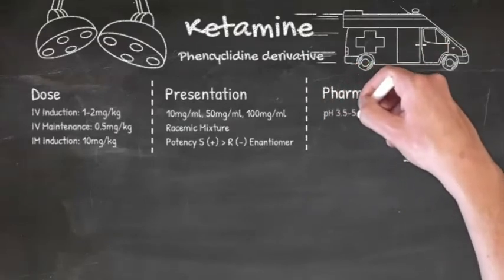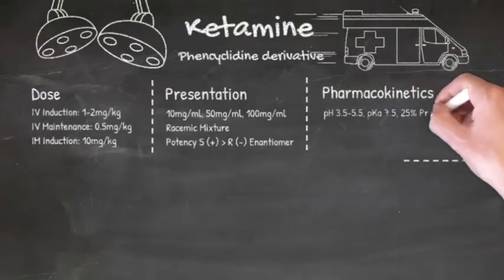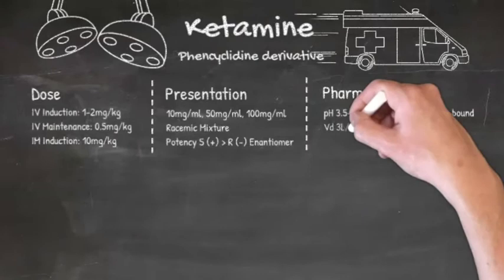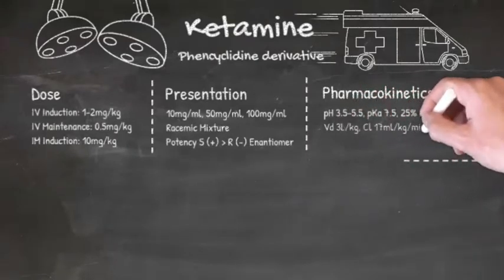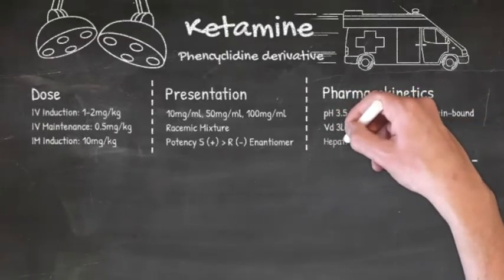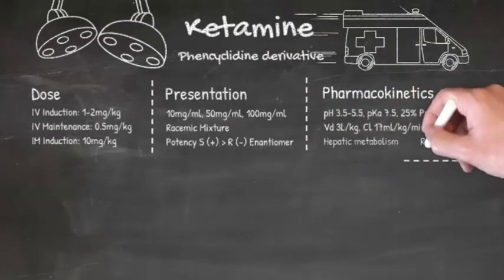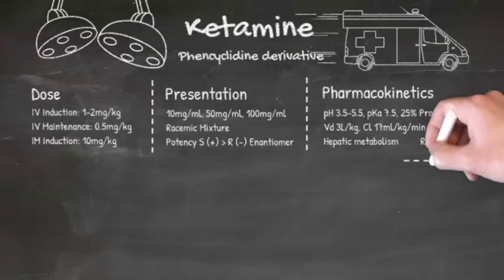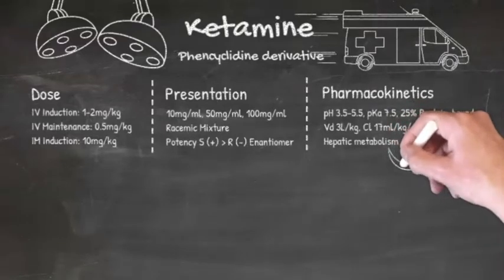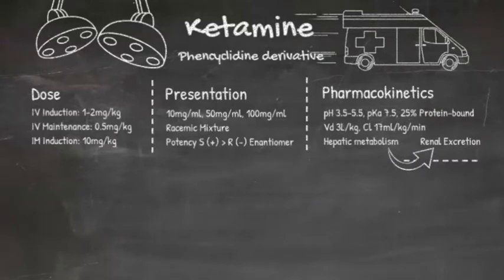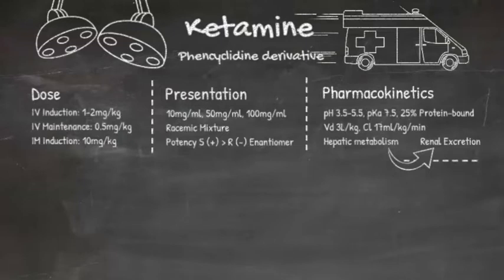Ketamine itself is a weak base. In solution, it has a pH of 3.5-5.5 and a pKa of 7.5. When it's injected, up to half of it becomes protein bound, but it works within about 30 seconds of IV injection. It has a volume of distribution of 3 litres per kg of body weight, so while its distribution half-life is only 10 minutes,